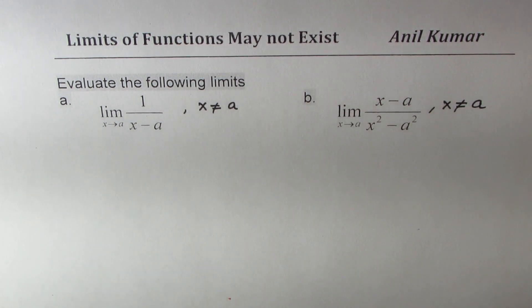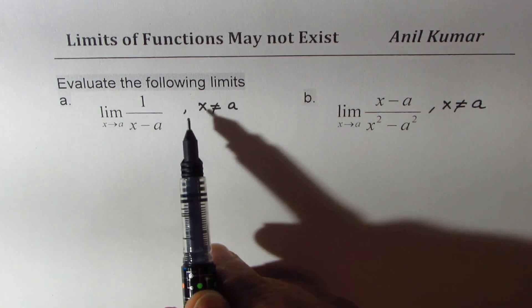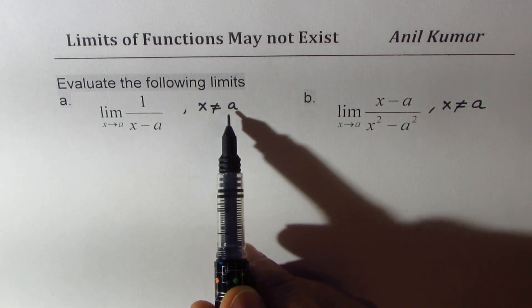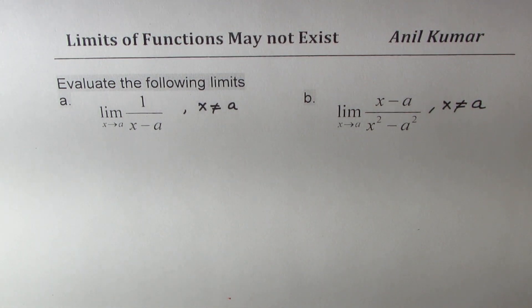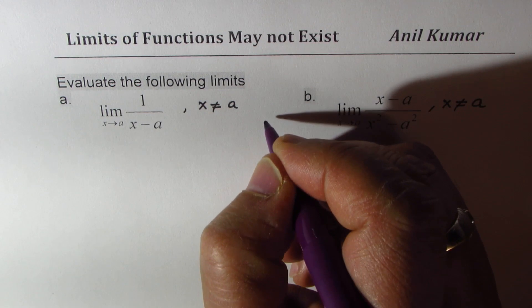Limits is approaching, right? So even if the function is not equal to that value or cannot be equal to that value, we can still find the limit. So let's consider them one by one and check our result.